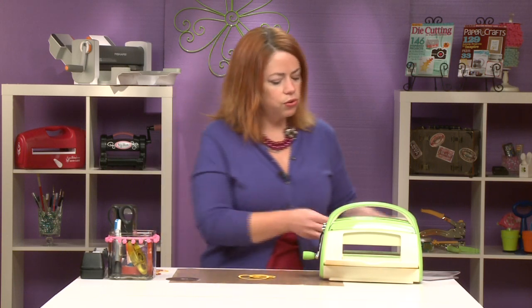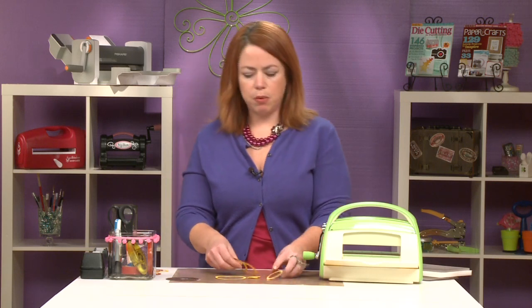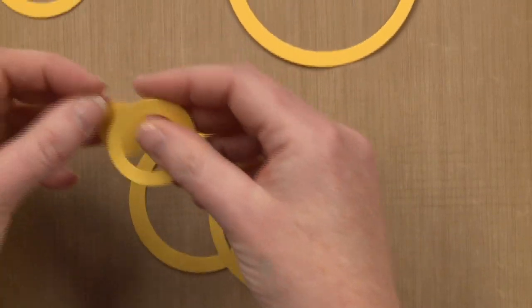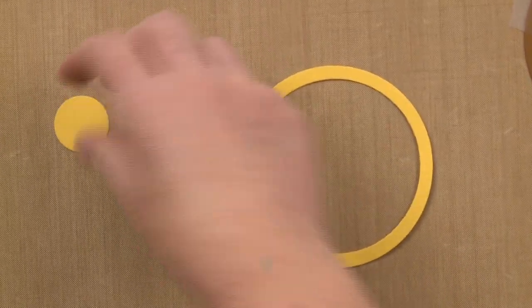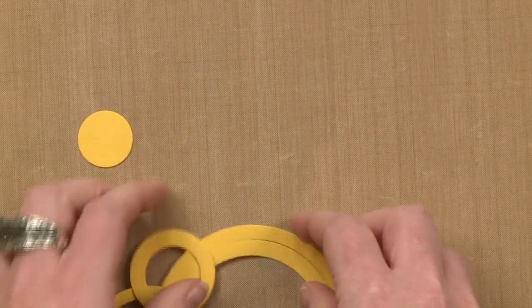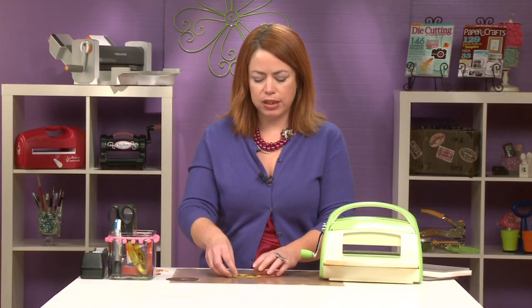Now you could use those circles separately for lots of different things maybe to put it around a sentiment. This could maybe go behind something or the middle of a flower. Lots of fun things there but you can also create quite an impact if you put several of them together.